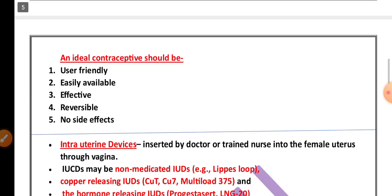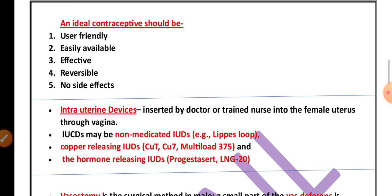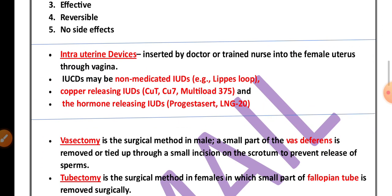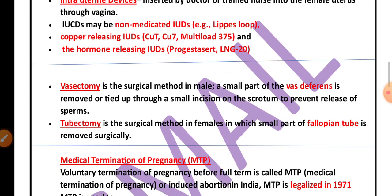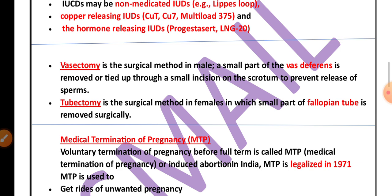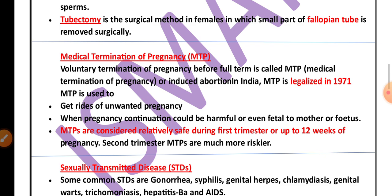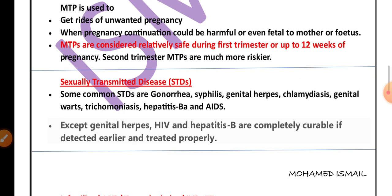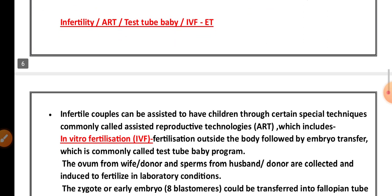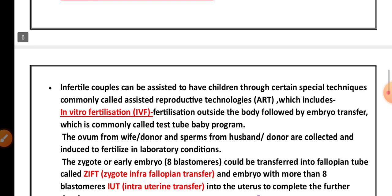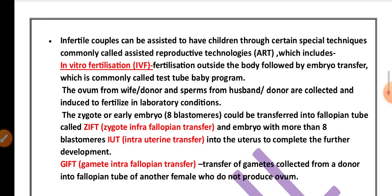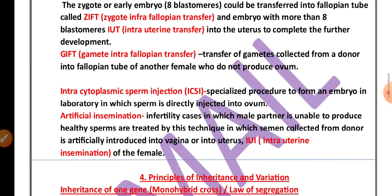The third chapter is reproductive health. From this chapter, the characteristics of ideal contraceptives are important. For three marks, the three different types of intrauterine devices along with examples are highly important. Vasectomy vs. tubectomy differences are very important. The question related to MTP is highly important, along with sexually transmitted diseases. For five marks, IVF — in vitro fertilization — embryo transfer, assisted reproductive technologies, and the conditions used to treat infertility are important.